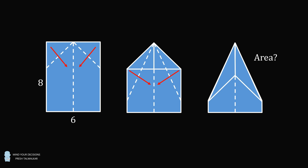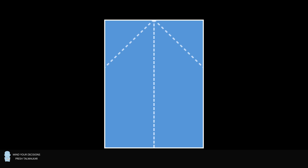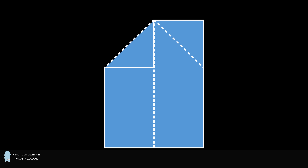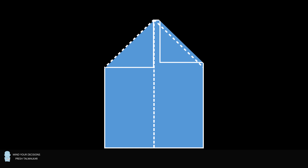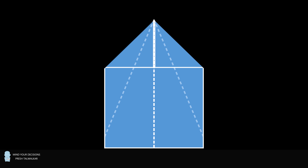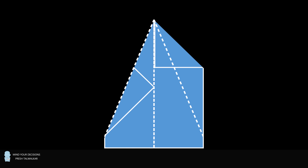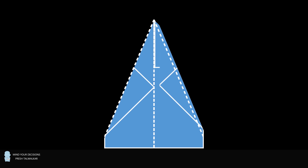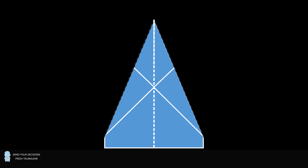Just to show you what this looks like in another way, here's an animation of how the paper folding would go. We start out with these folds, and then we fold the paper so that the corners go to the center. We then make two more folds so that the new corners go to the center. This is the final resulting shape, and we need to figure out its area.